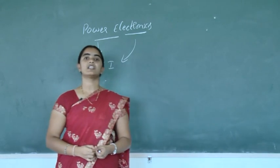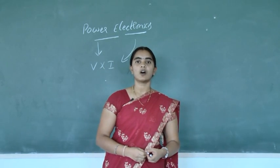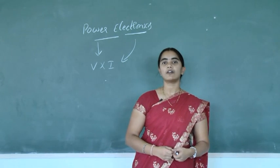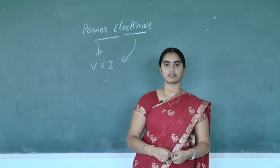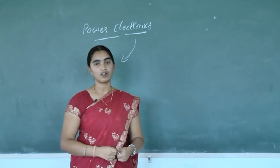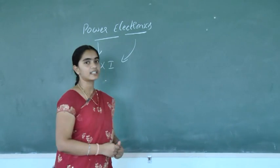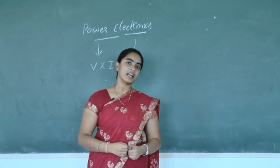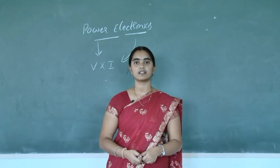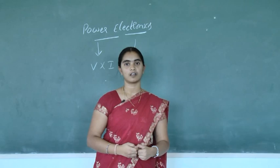Why do we have to control voltage and current, or why do we have to control power? In order to obtain the desired output and to improve the system performance, we have to use these power electronic devices. Nowadays, power electronics plays a very vital role in industrial applications and also in domestic applications. So power electronics means power can be controlled by using power semiconductor devices or electronic devices in order to obtain the desired output and to improve the system performance.